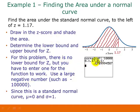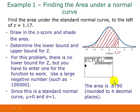So here's what you would enter in your calculator. You would have normalcdf, negative 100,000 for your lower bound, 1.17 for your upper bound, 0 for the mean, and 1 for the standard deviation. If you put that in and press enter, you would get this value. So the area of the region that we've got shaded in here is 0.8790. And the standard for probabilities is that we round to four decimal places.